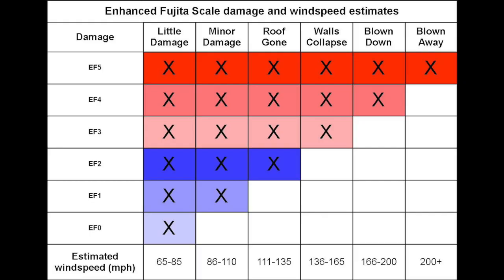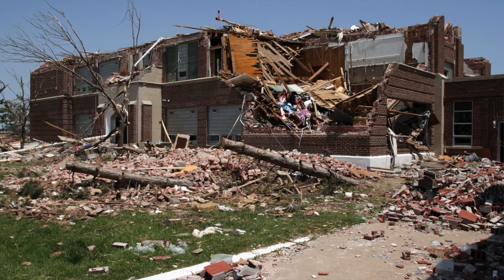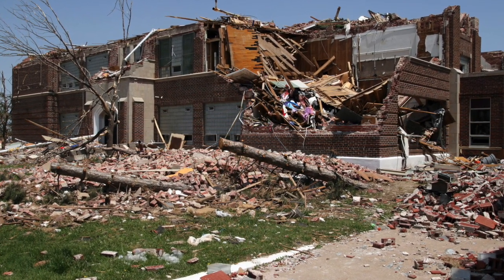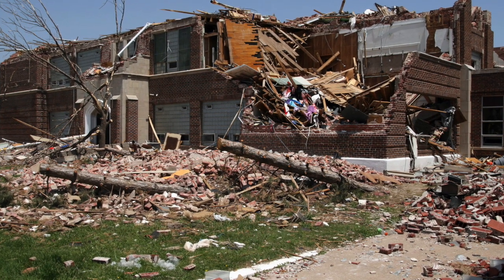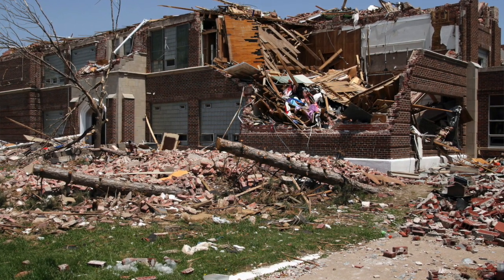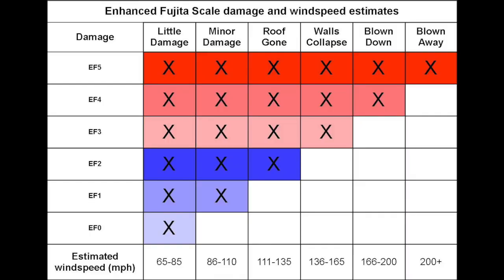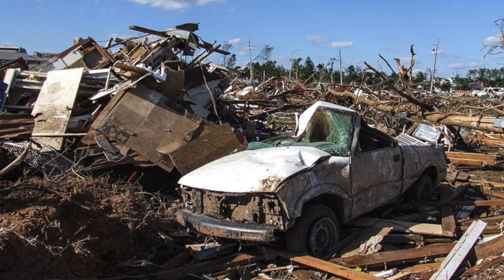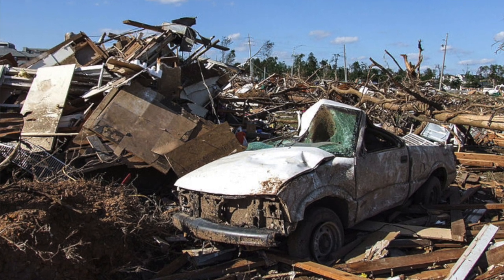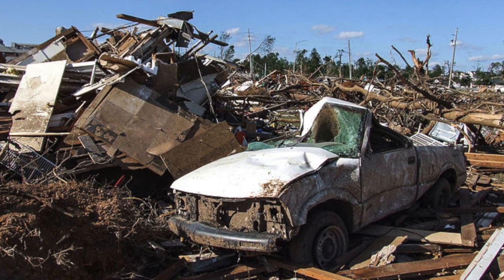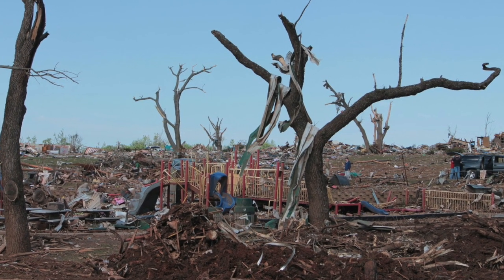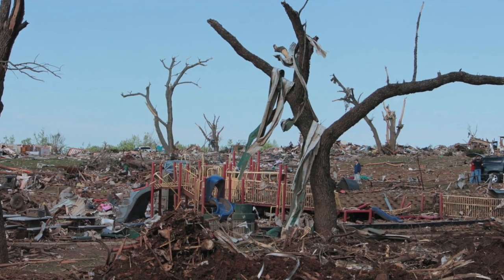An F3 has wind speeds of 158 to 206 miles per hour and causes severe damage — trains can be overturned, cars lifted off the ground, and strong built homes have outside walls blown away. An F4 has 207 to 260 miles per hour winds, causing devastating damage: houses leveled leaving piles of debris, and cars thrown 300 yards or more in the air. And an F5, at 261 to 318 miles per hour, causes incredible damage — strongly built homes are completely blown away.